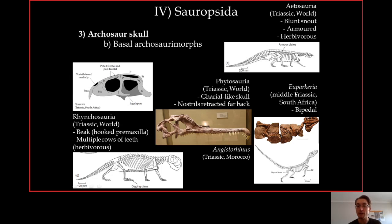Another important species of basal archosauriform is Euparkeria from the Middle Triassic of South Africa. Euparkeria is one of the first bipedal archosauromorphs — the forelimbs are much shorter than the hindlimbs, meaning this animal was already bipedal, which foreshadows what will happen in dinosaurs. The Aetosauria, another group not well represented in Southern Africa, are one of the first fully armored herbivorous species — long before the dinosaurs turned into living tanks.